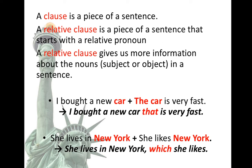So in the first sentence, 'I bought a new car that is very fast' — which one is the relative pronoun? And in the second sentence, 'She lives in New York, which she likes' — which one is the relative pronoun?